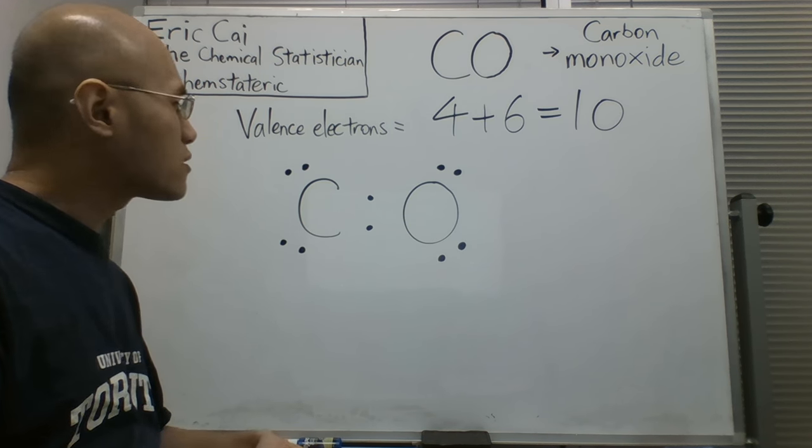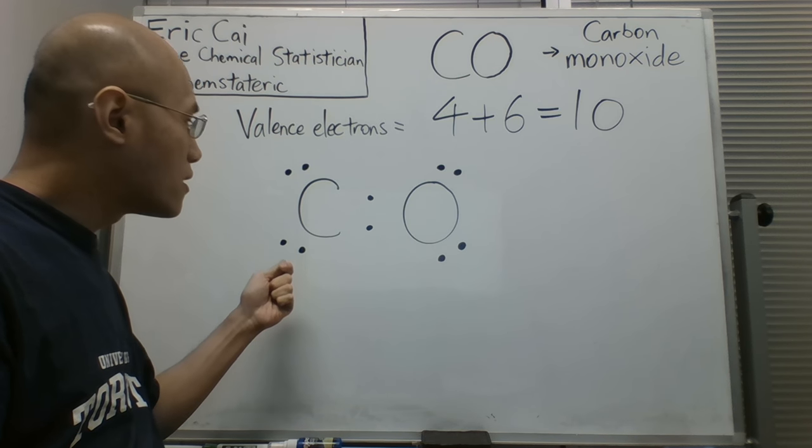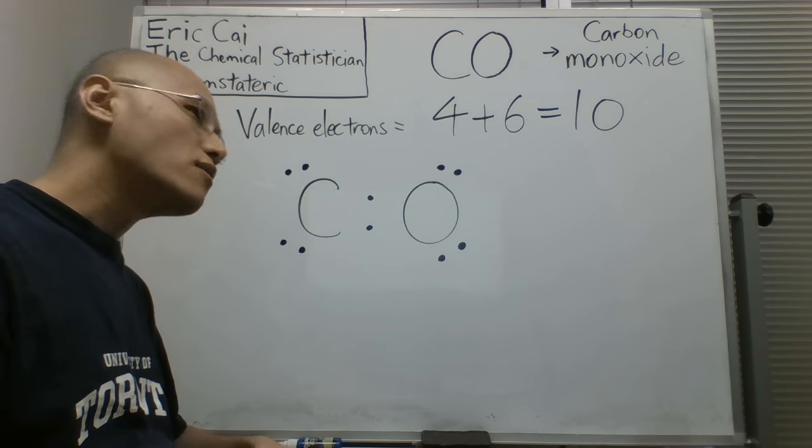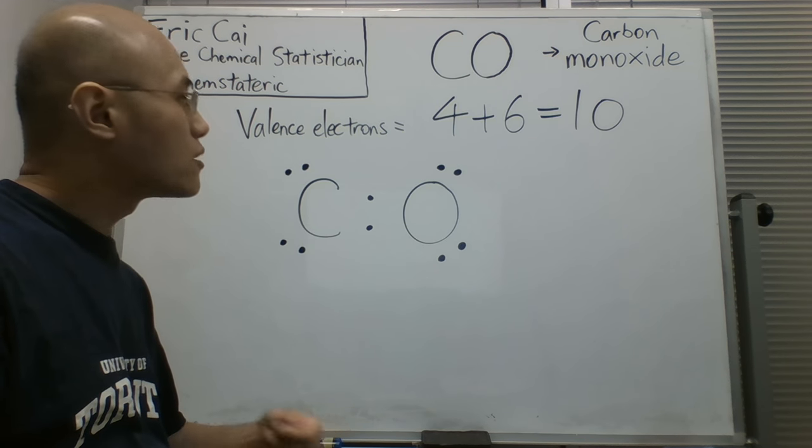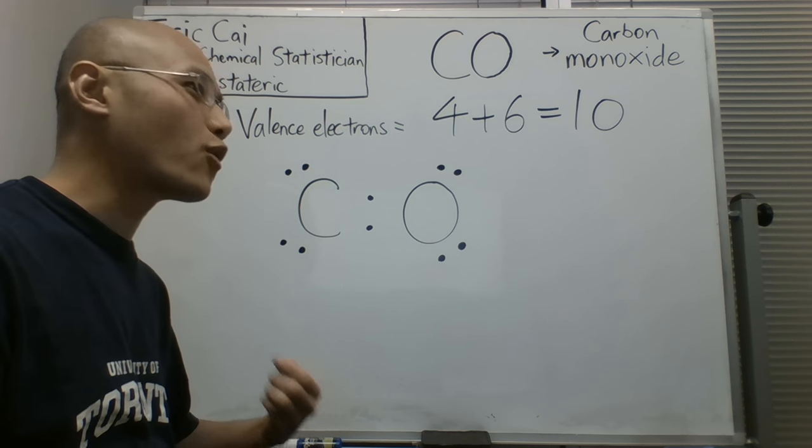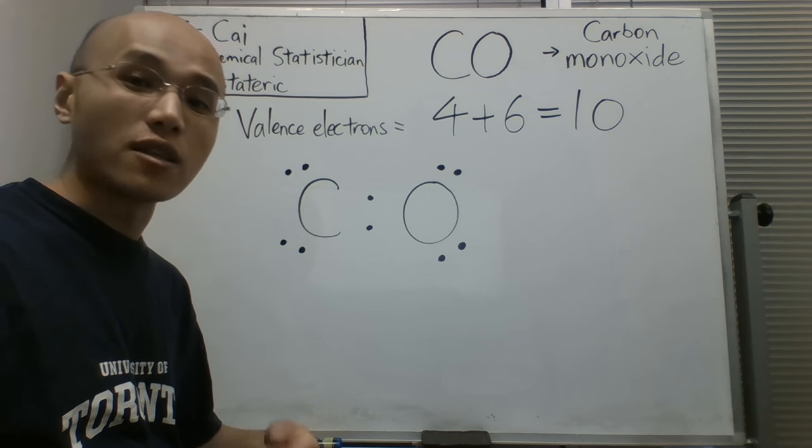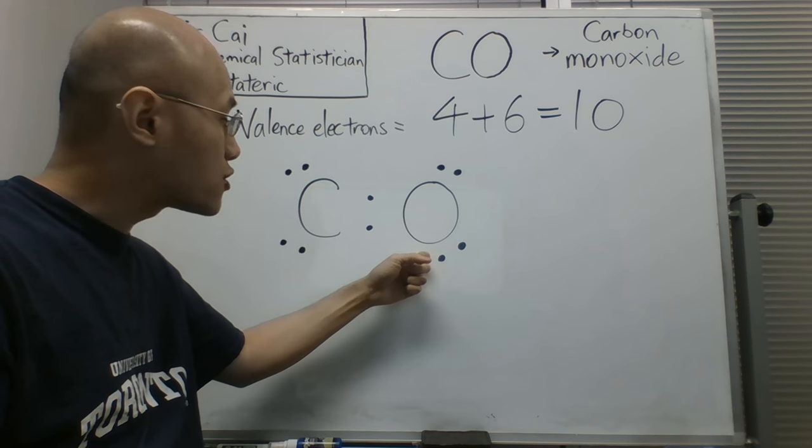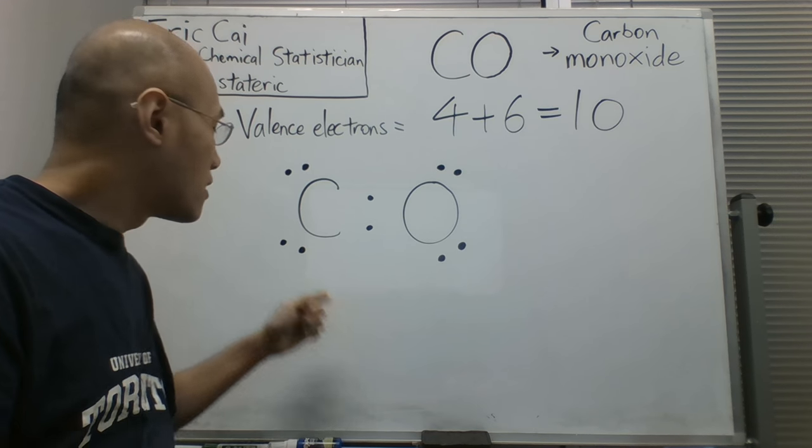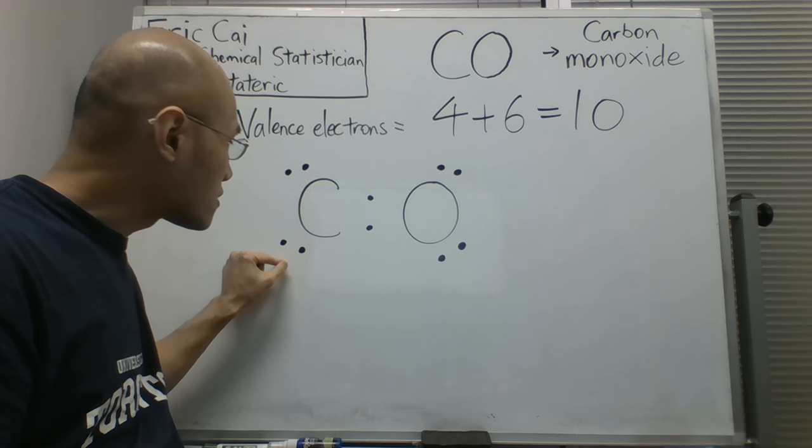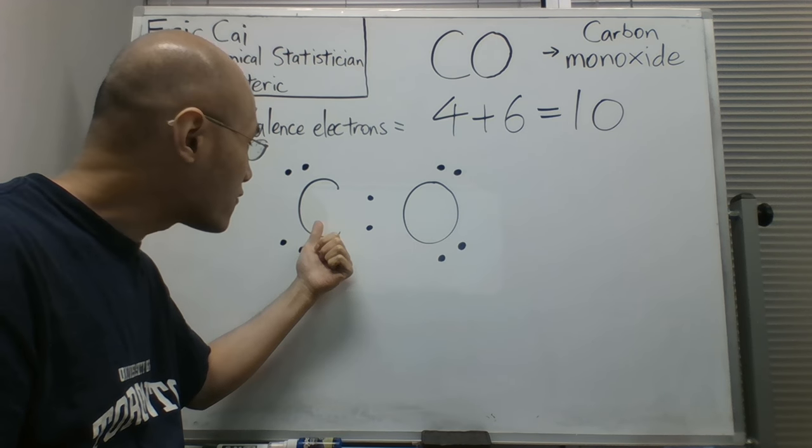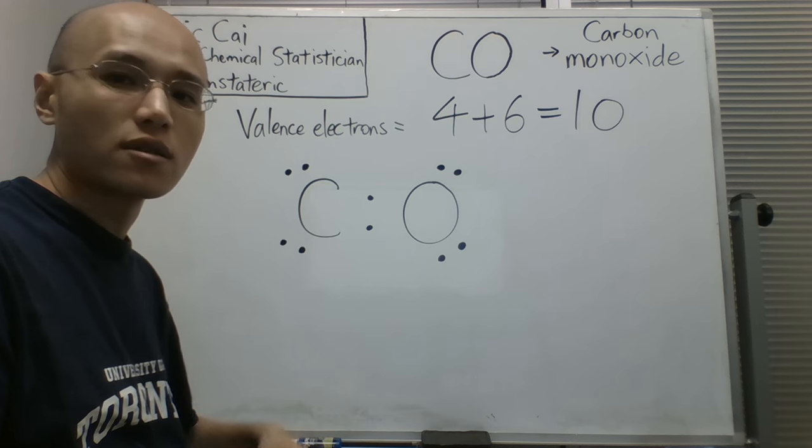So the question is, which pair is to be moved into the bond? Well, you can start by thinking about which atom is more electronegative. And we know from the trends on the periodic table that oxygen is more electronegative than carbon. So we start by moving the electrons towards the bond, because the oxygen is going to draw electrons away from carbon towards the oxygen.